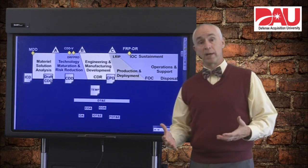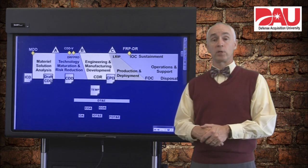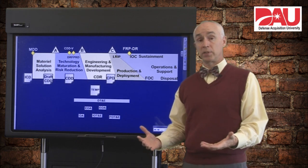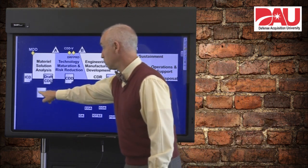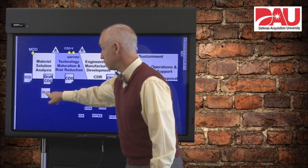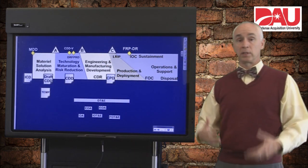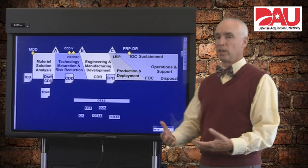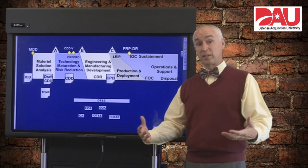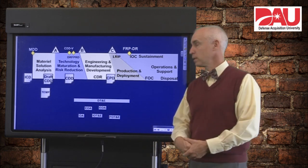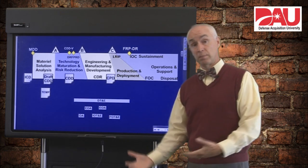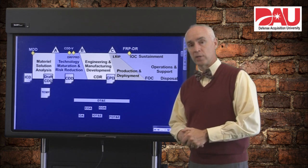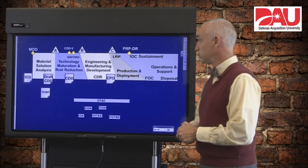Now let's take a look at where the different types of test events that we would expect in developmental and operational testing might occur over the lifecycle. First, you're going to start with a test and evaluation master plan that you're going to put together prior to Milestone A. To guide all of this, we're going to have a test and evaluation master plan, or TEMP, that's going to tell us what our schedule is for testing, what tests are going to occur when, and who's going to do those tests. That's developed by an integrated product team called the Test Working IPT, or WIPT. You have representatives there from your operational test community and your developmental test community, and you want your test chief from your program to chair that integrated product team.